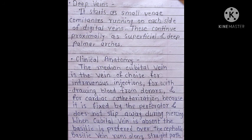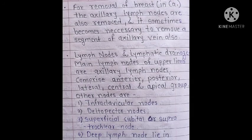When the median cubital vein is absent, the basilic vein is preferred over the cephalic vein because the basilic vein runs along a straight path — this is an MCQ point. For removal of the breast in carcinoma, the axillary lymph nodes are also removed, and it sometimes becomes necessary to remove a segment of the axillary vein as well.